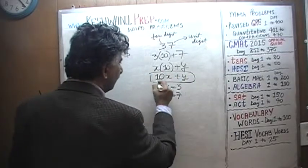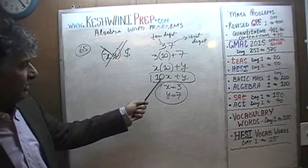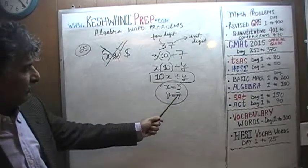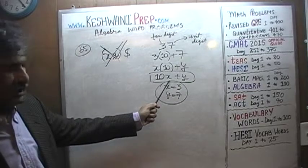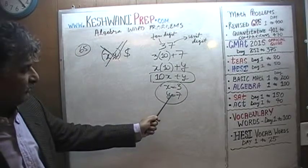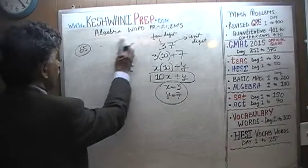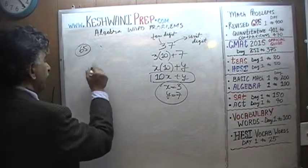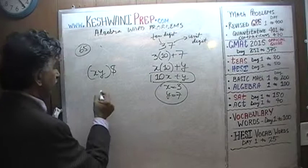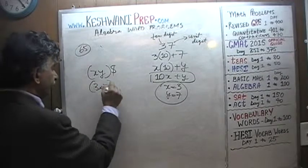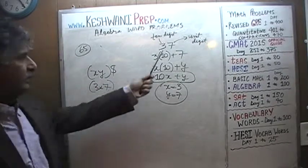Voilà — there you go. This is the number we are dealing with. If X happens to be 3 and Y happens to be 7, then this quantity 10X plus Y represents 37. XY dollars, assuming X is 3 and Y is 7, is 3 times 7 — that represents 21 dollars, not 37 dollars.